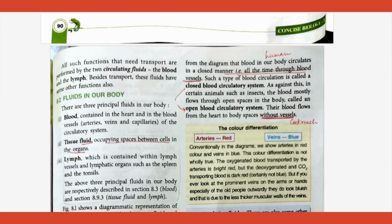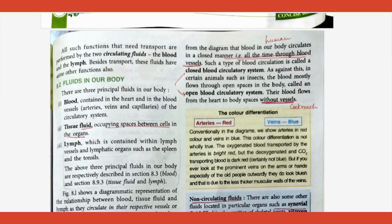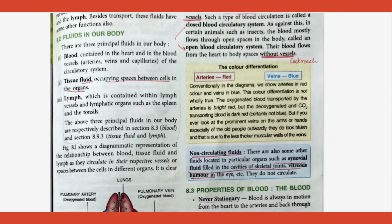There are different circulating fluids and non-circulating fluids — examples can be asked for one mark. Circulating fluids are blood, lymph, and tissue fluid. Non-circulating fluids — please mark — synovial fluid, vitreous humor, and so on. Mark these right there as one-mark questions.